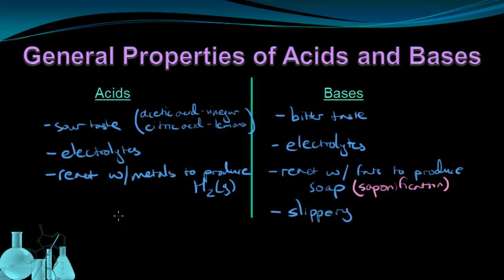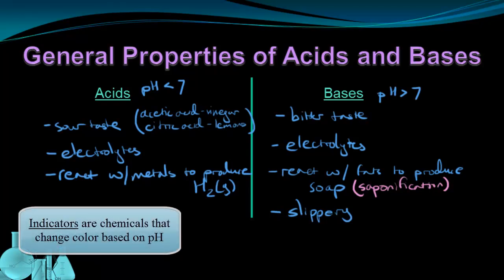And the last property that we'll use to identify acids and bases is something called pH. And you've probably heard of pH before, but acids have a pH of less than 7, whereas bases have a pH greater than 7. Another way of distinguishing between acids and bases is to use something called an indicator, which is just a chemical that changes color when in contact with an acid or a base.